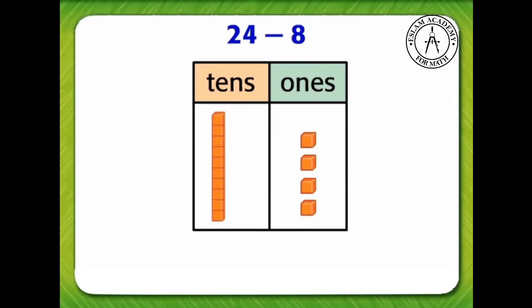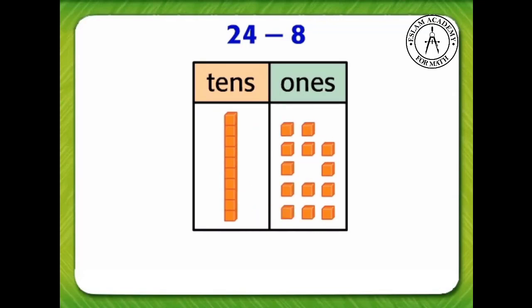To regroup, we take one 10 from the 10s column and replace it with 10 1s, since they are equal. Now, we have 14 1s.